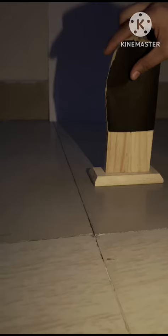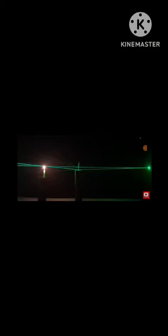If we cover the full convex lens with black paper, then no image is formed. This can be explained with the help of this diagram.